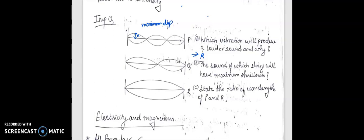Moving to question number two: the sound of which string will have maximum shrillness? P will have maximum shrillness. The reason is the frequency is maximum. Now state the ratio of wavelengths of P and R. This will be 1 is to 3.